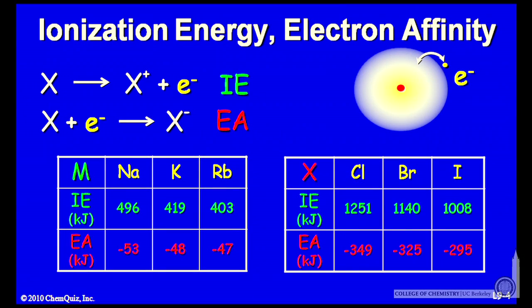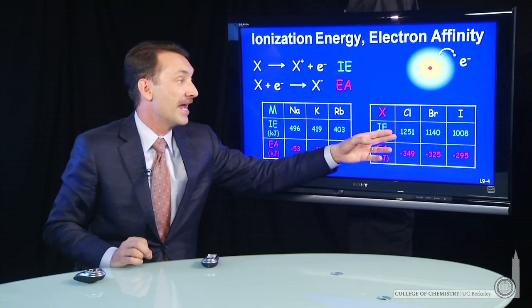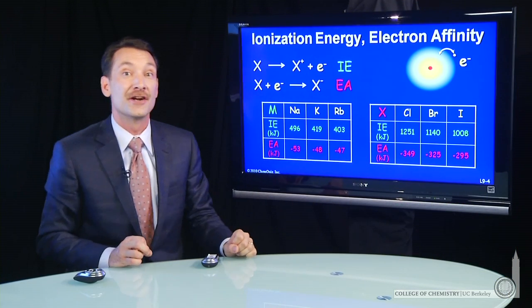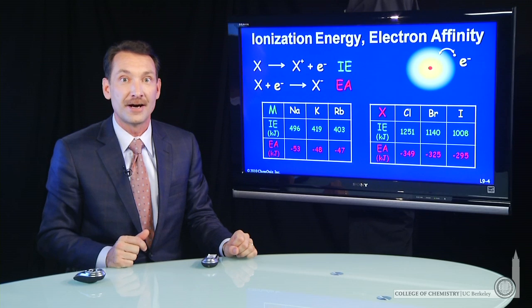And I see that in chlorine, bromine, and iodine as well on the other side of the periodic table. I have a decrease in ionization energy as I go down the column.